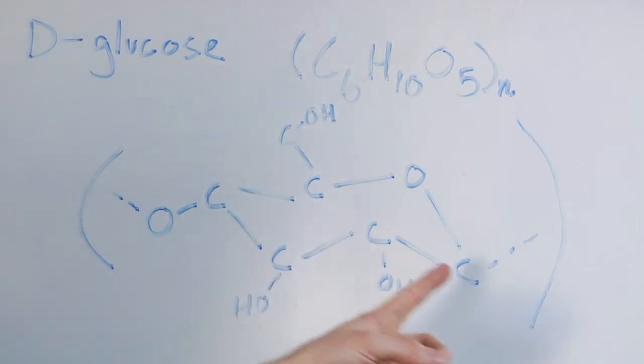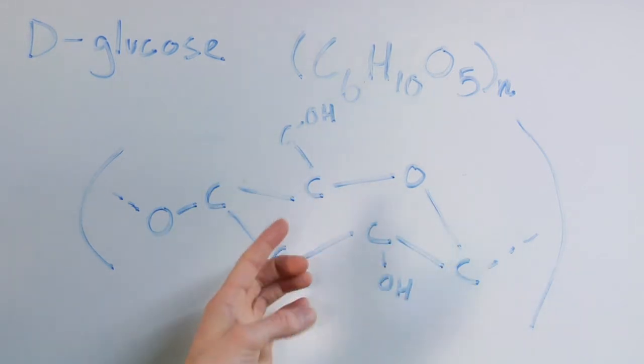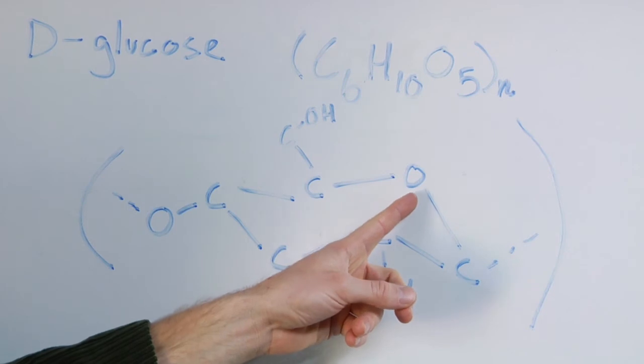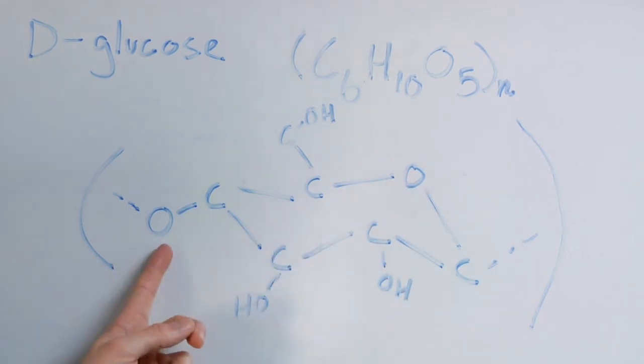Here are your six carbons forming the main section. You have an oxygen here inside the ring and an oxygen here on the outside. And then the remainder is filled up by hydroxyls, which is OH groups.